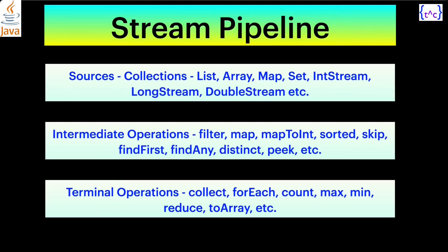Terminal operations are the mandatory final step. Examples include collect — to collect data into a list after intermediate operations — forEach for iteration, counting, getting maximum or minimum values, reduce operations, and toArray. These are some important examples, but there are many more intermediate and terminal operations provided by Stream APIs in Java 8.